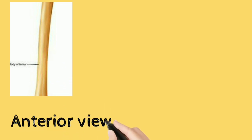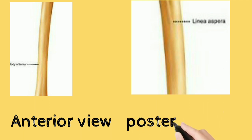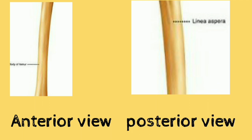The middle part of the shaft has three surfaces and three borders. The surfaces are the lateral, anterior, and medial surface. The three borders are the lateral border, the medial border, and the posterior border — and this posterior border is known as the linea aspera. In the posterior view, you can see the linea aspera has two lips: the lateral lip and the medial lip.